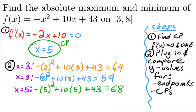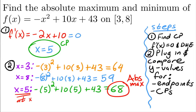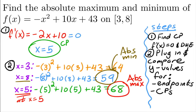Looking at all three values, the absolute maximum is 68 and it's located at x = 5. The absolute minimum is 59 and it's located at the right endpoint x = 8.